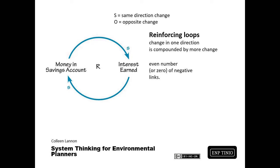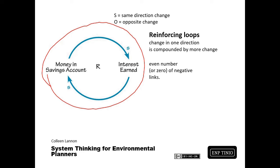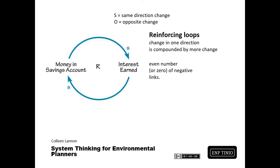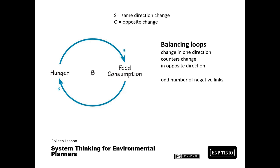There are two types of causal loops. First, the reinforcing loop, which shows that a change in one direction is compounded by more change. As seen in this simple causal loop, the interest that is earned by a savings account is reinforced or compounded when money in that savings account is increased.